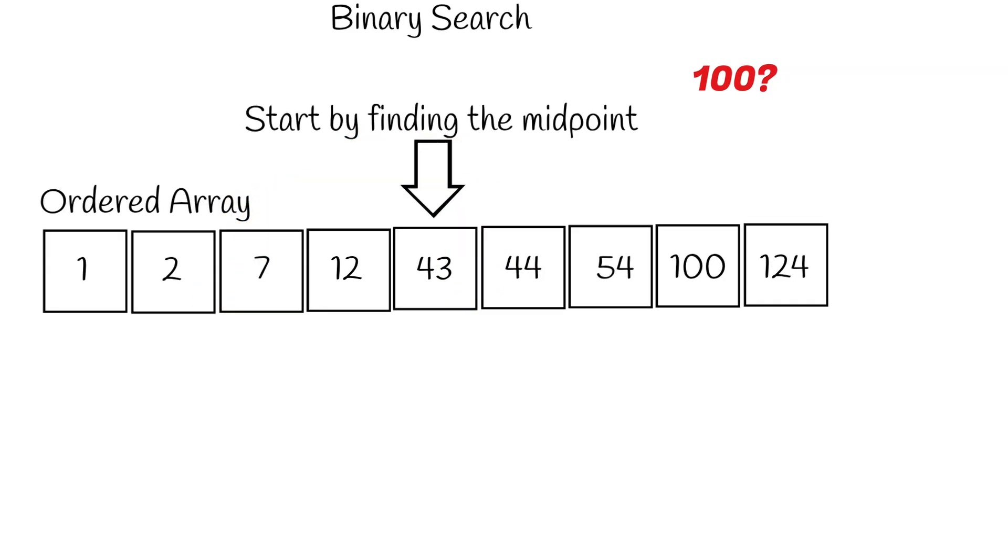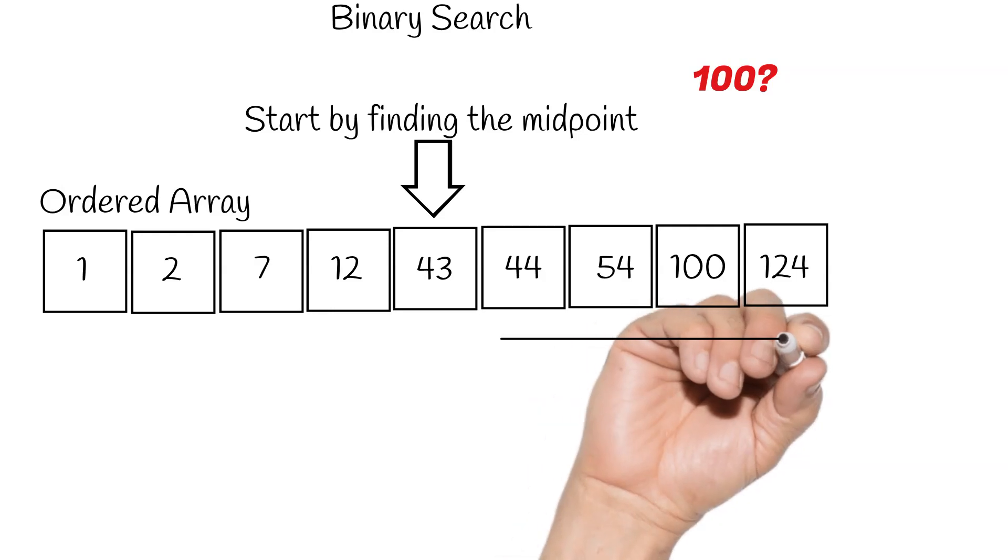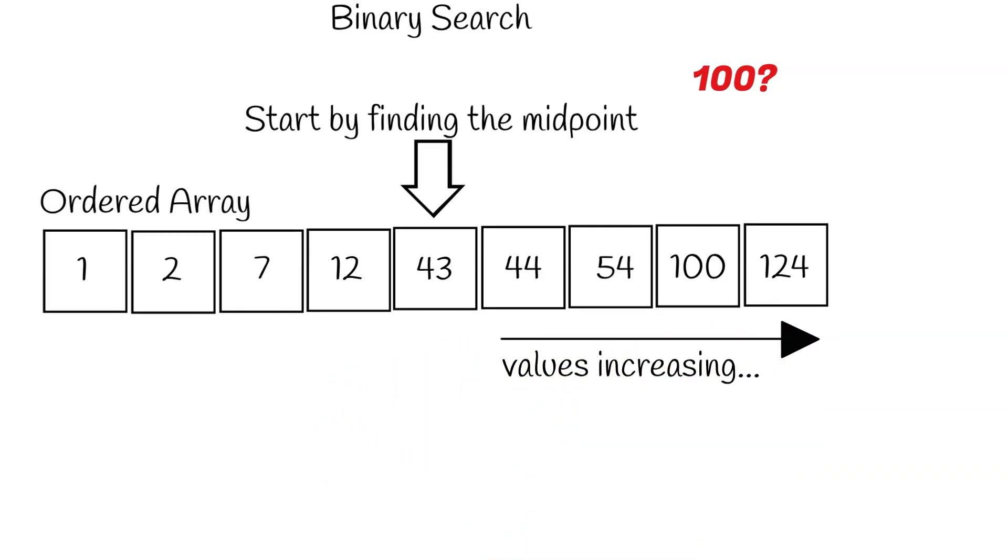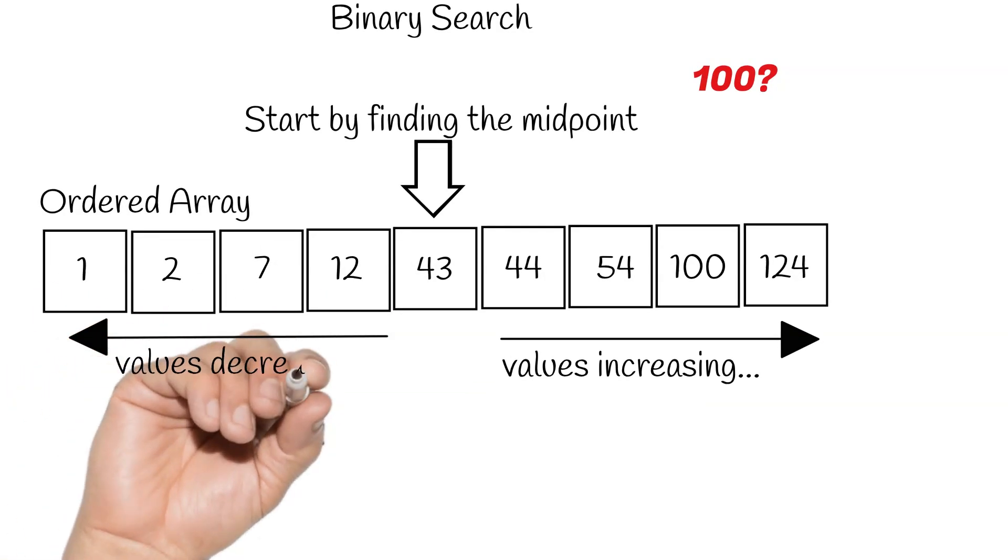Now, since our array is in ascending order, we know that anything to the right of our midpoint will be a value that is larger than our midpoint. And everything to the left of our midpoint will be a value that is less than our midpoint.